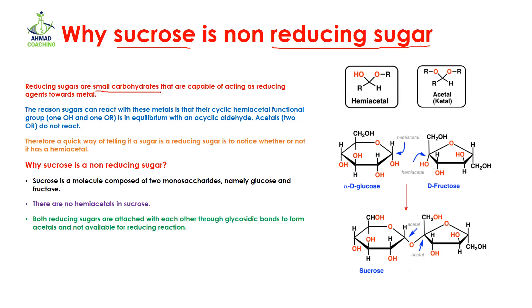Reducing sugars are small carbohydrates — carbohydrates mean they have carbon, hydrogen, and oxygen — and they are capable of acting as a reducing agent towards metals. Reducing agents mean that they are going to give their hydrogen to another molecule and in return they are going to be oxidized. The reason sugars can react with these metals is because of their cyclic hemiacetal functional group.